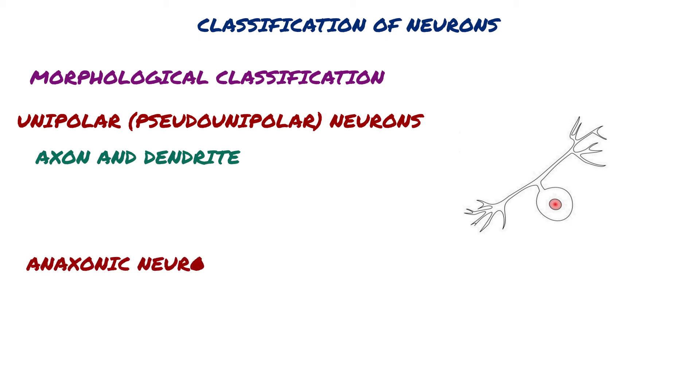Anaxonic neurons have many dendrites but no true axon. They do not produce action potentials but regulate electrical changes of adjacent neurons.